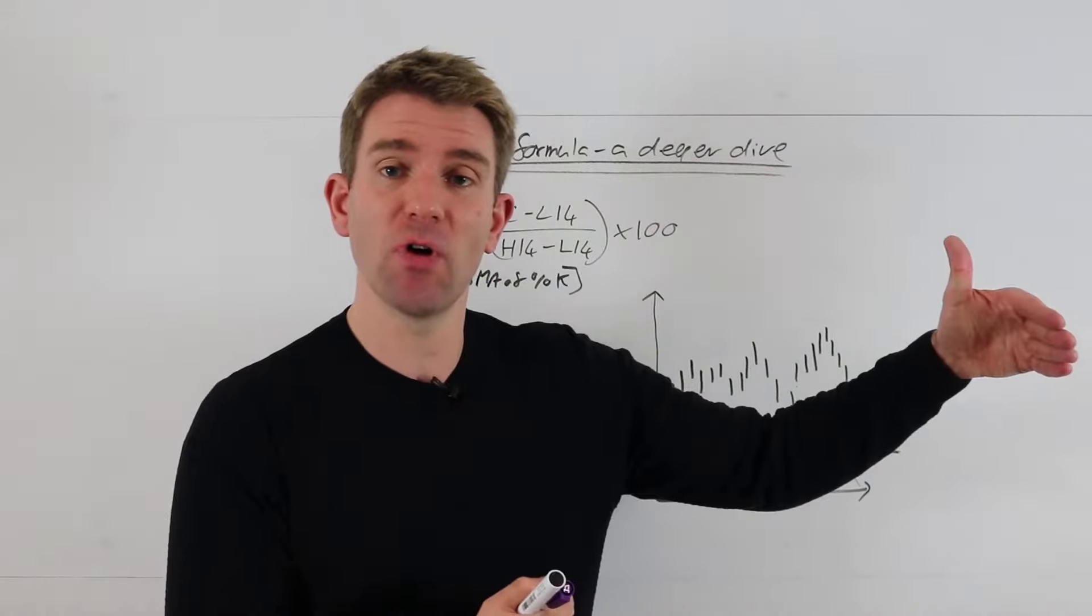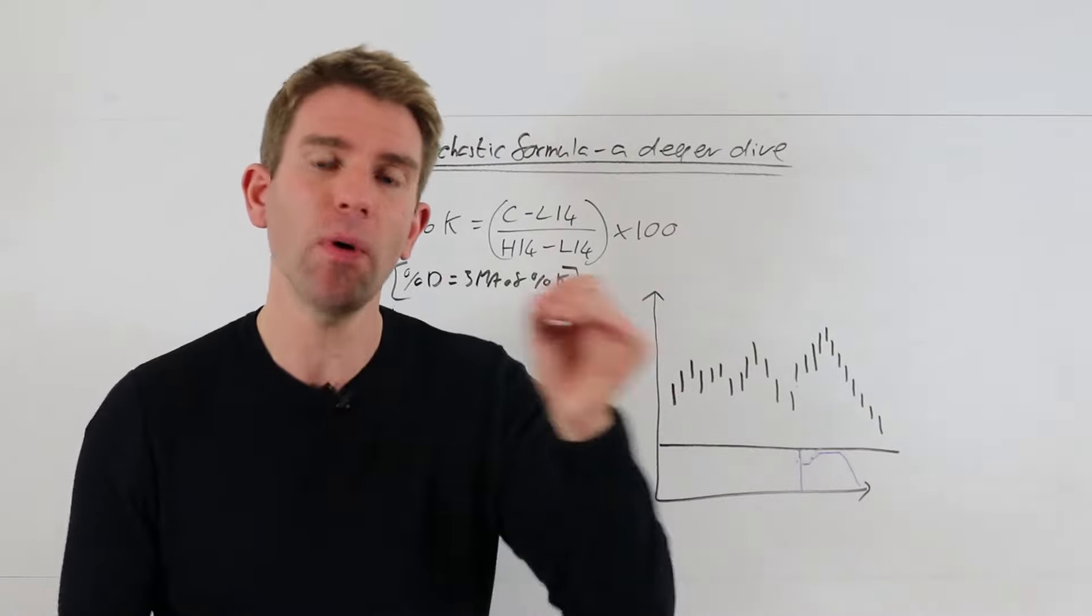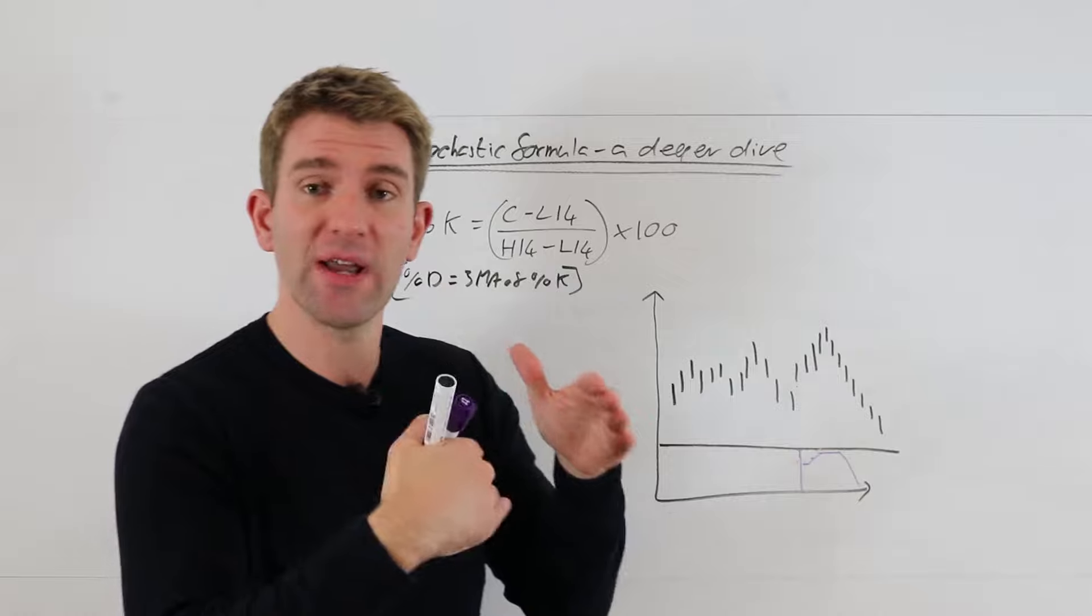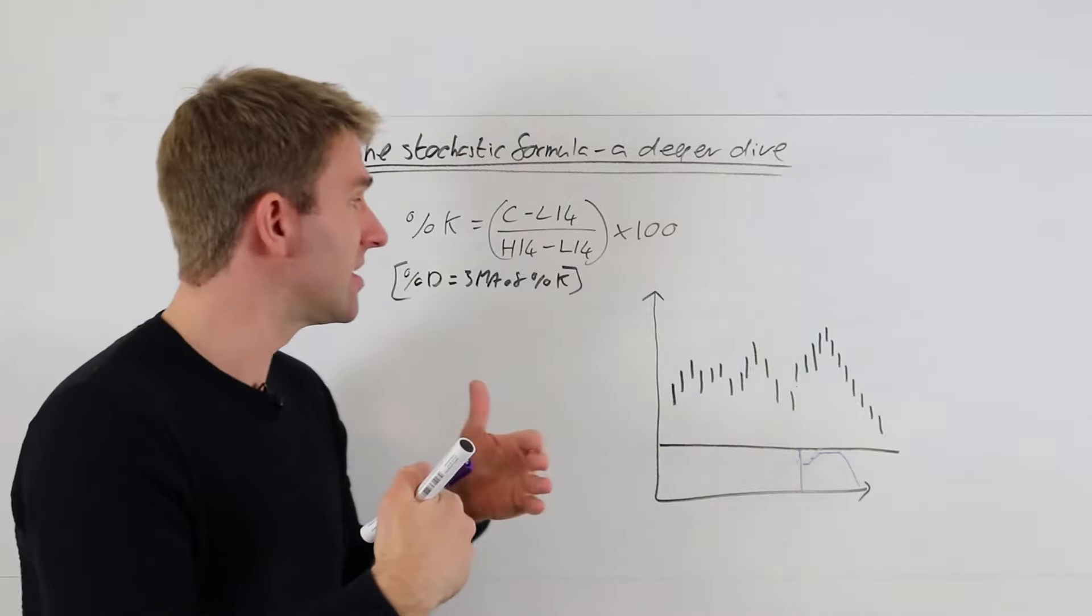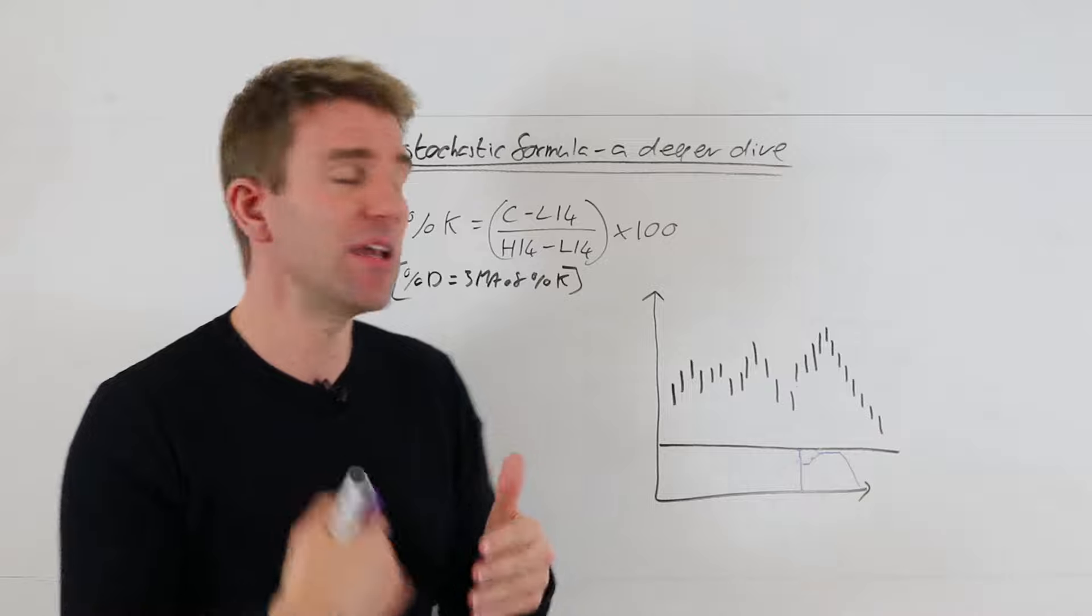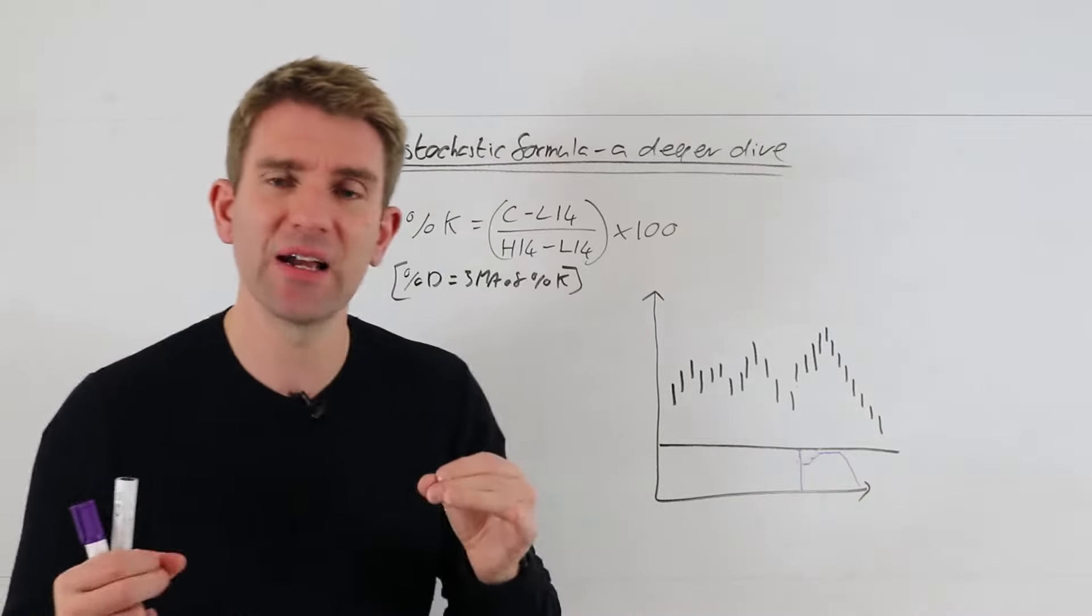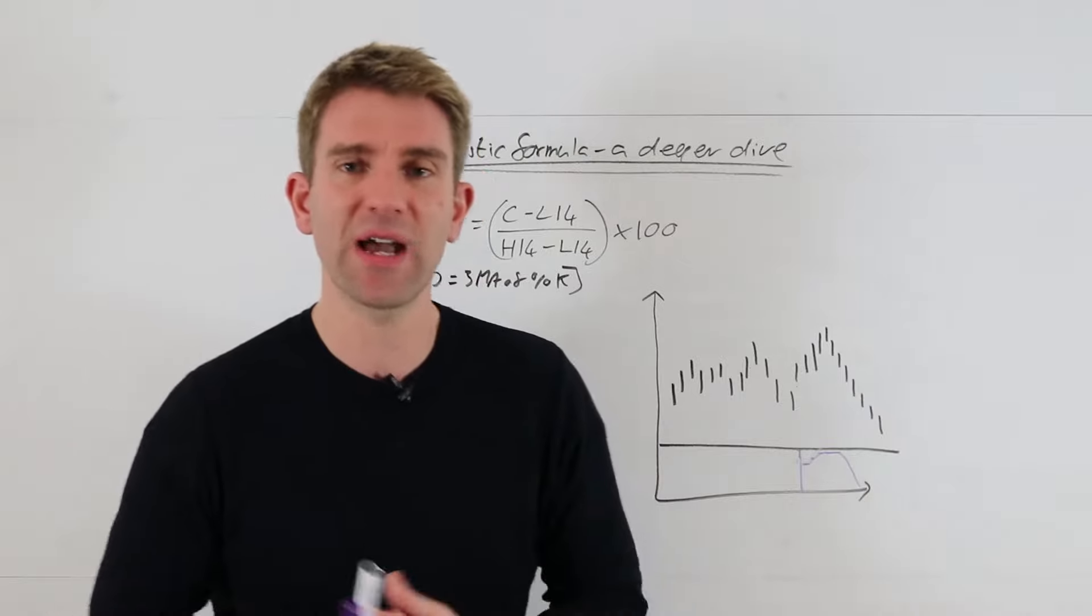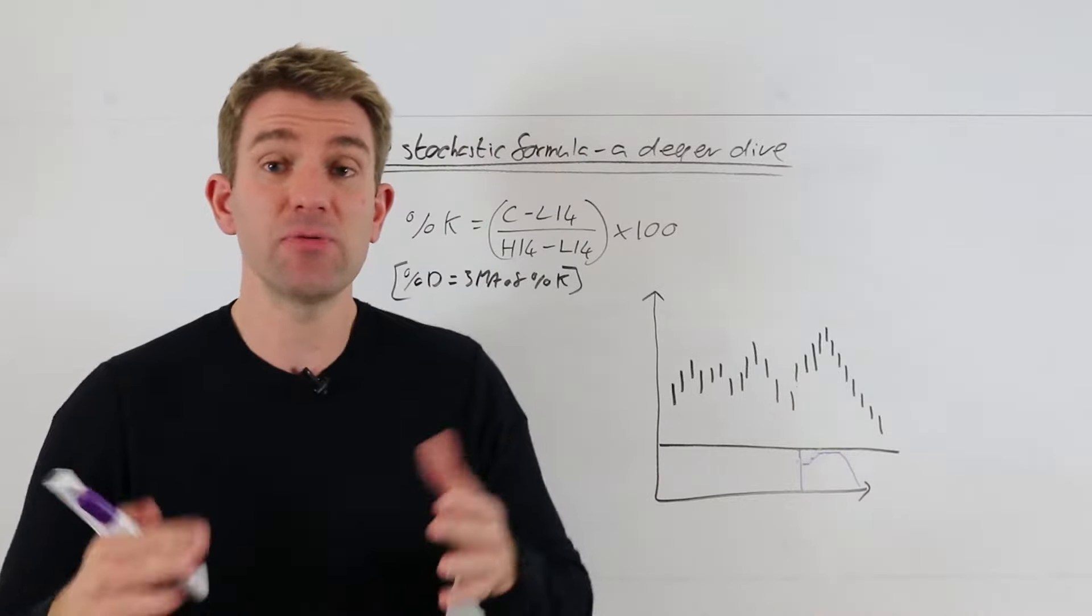Now we can see our extremes, our overbought conditions and our oversold conditions. Obviously there's going to be bits in between. If we're in the midpoint of the range of the past 14 days then we're going to be right in the middle of stochastic, it's going to give us about a 50 period reading.